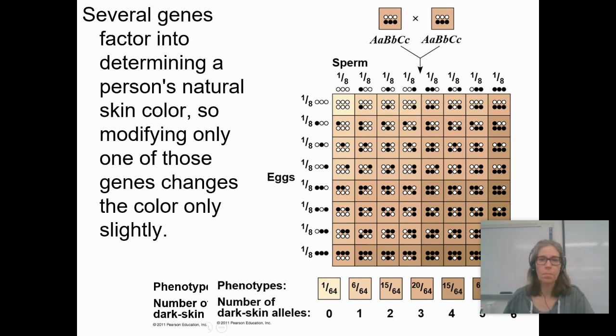Anytime you have a trait like that, where you can have, this is only showing three different genes with someone who's heterozygous. I think for skin color there's like eight or nine genes that code for skin color. So this is all the variations just with two parents who are heterozygous for just three traits.